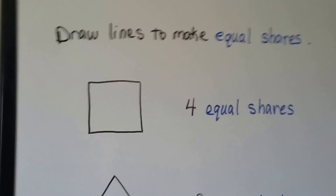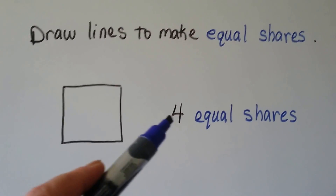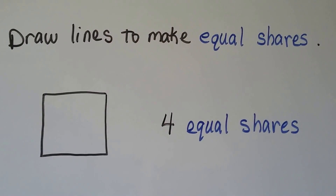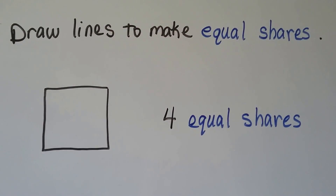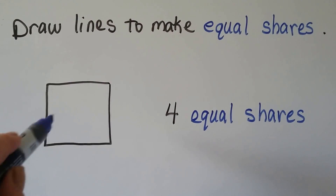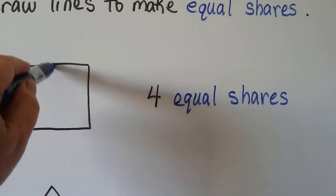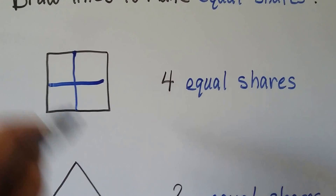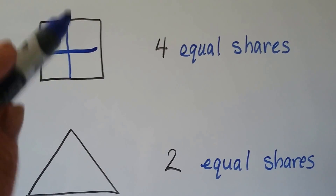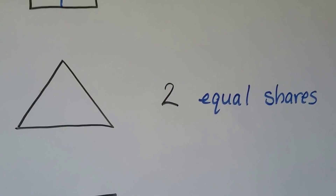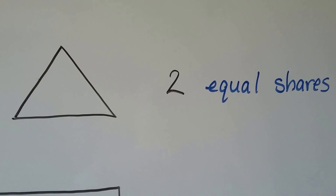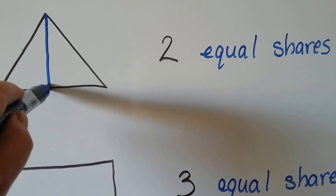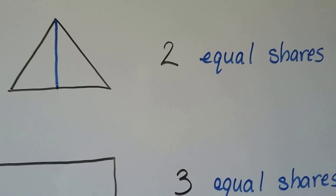We need to draw lines to make equal shares. It wants four equal shares in this square. So how can we draw lines to make four equal shares? We could draw a plus sign like that. We could even go from vertex to vertex. Either way, if we drew a plus sign like that, we would have four equal shares. What about two equal shares for this triangle? We could draw a line going from this vertex all the way down to its base, so it cuts it in half — that would be two equal shares.